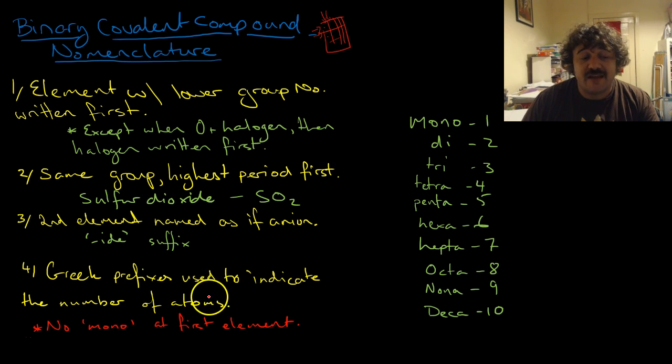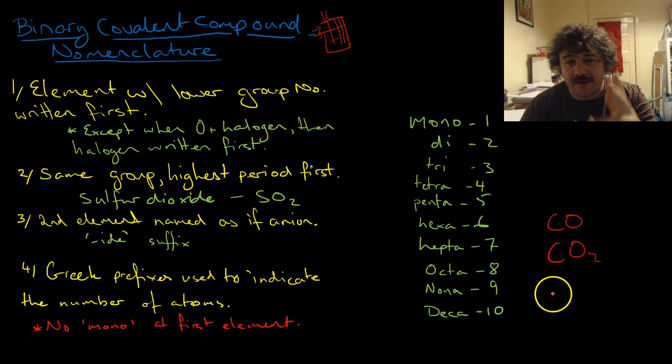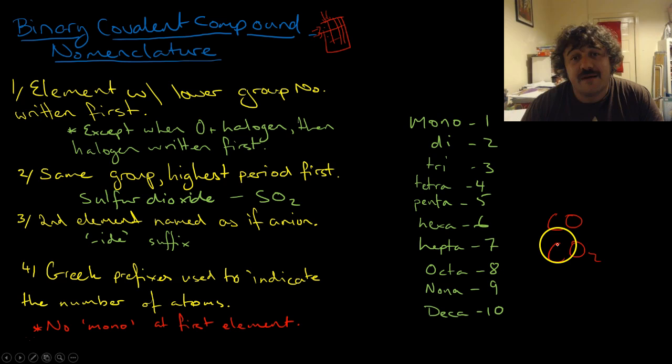Greek prefixes are used to indicate the number of atoms. So, mono, so if you've got, okay, let's have a quick example here. So if you've got here, and we'll have this one as an example. Okay, so there is no mono on the first element. That's really important. So if you didn't have this rule here, this would look like monocarbon monoxide, but we don't write mono on the first one. So this one is straight carbon. That's Mr. Smedley. This one is straight carbon monoxide. And see, there's two oxygens here, still named as an "-ide." It is carbon dioxide.